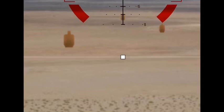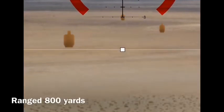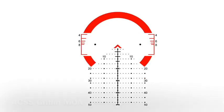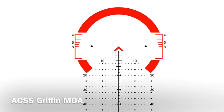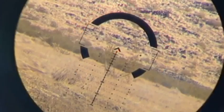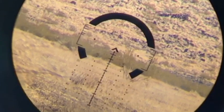That's the big advantage to these is that you can very quickly get on target. Here is the ACSS Griffin MOA, and this will also come in a milled version as well.